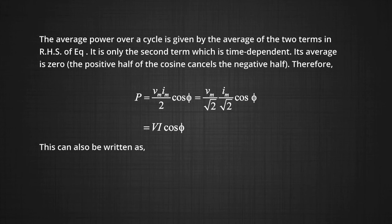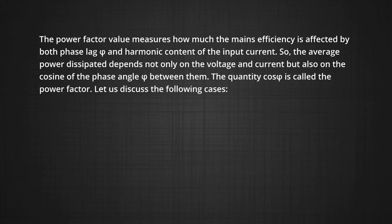This can also be written as P = I²Z·cos φ, and since P = I²R, we can make that substitution. The average power dissipated depends not only on voltage and current, but also on the cosine of the phase angle φ between them. The quantity cos φ is called the power factor.